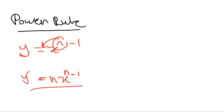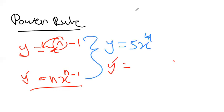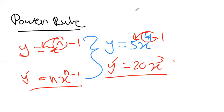Let's take a quick example. If we have y equals 5x to the power 4, in order to differentiate we multiply the power by the coefficient, so 4 times 5 is 20, and we subtract 1 from the 4 to get 3. The derivative is 20x³. This is how easy and fast it is.